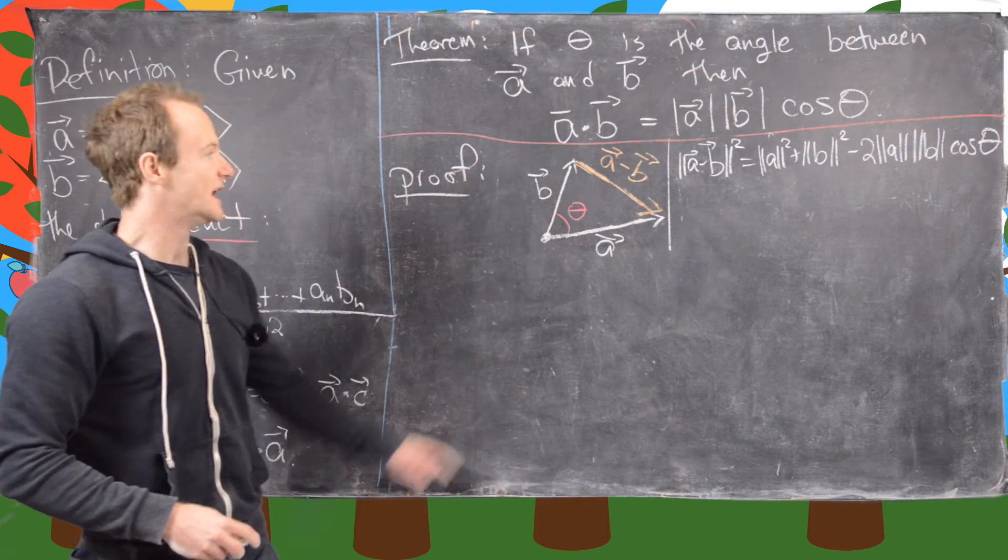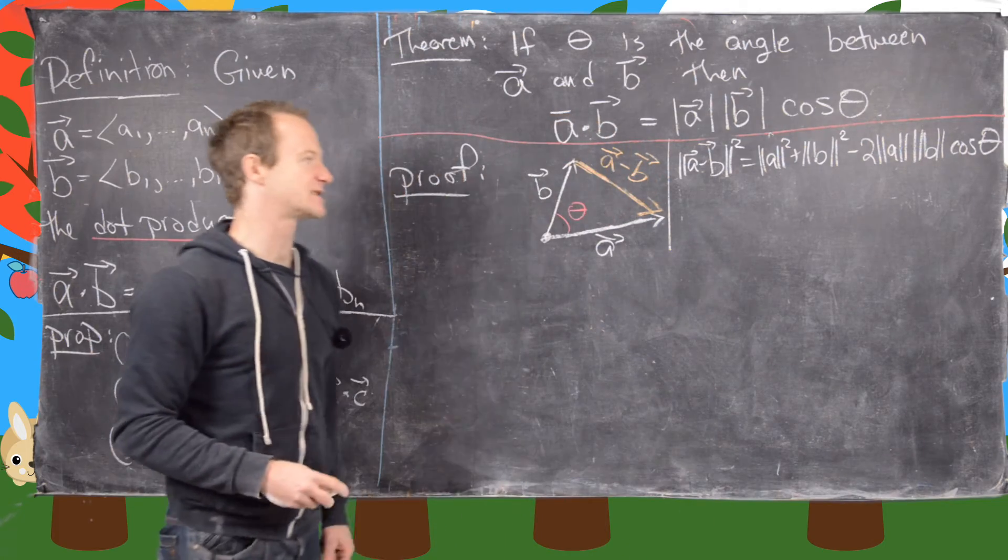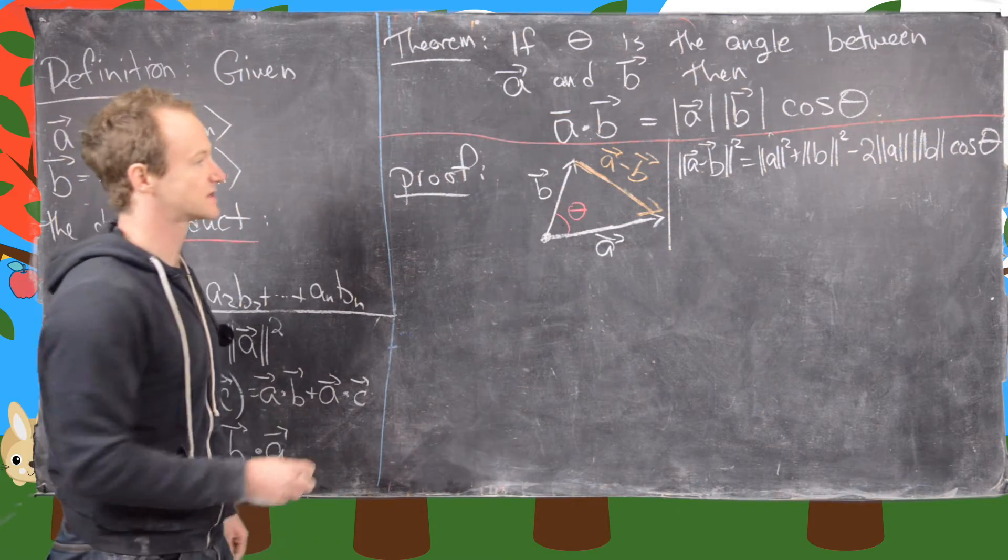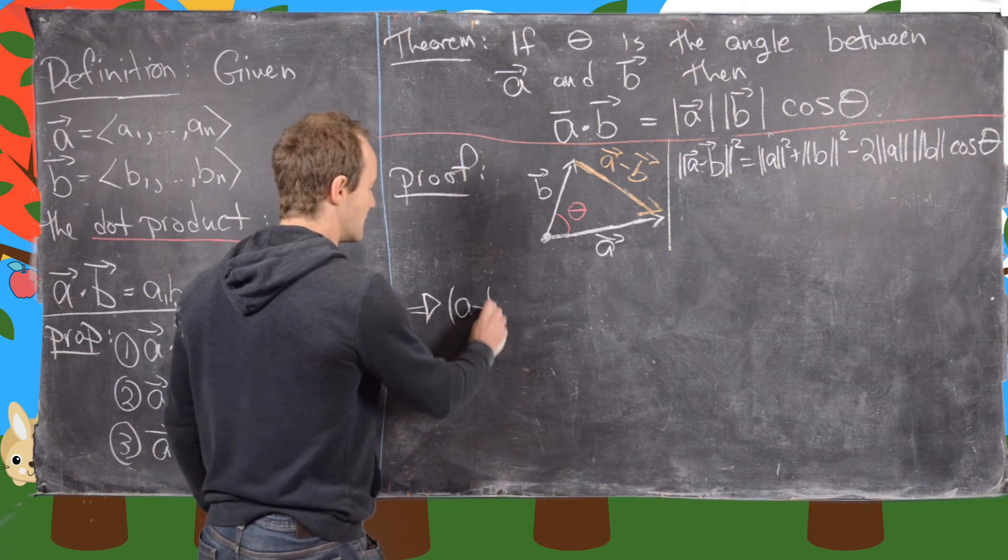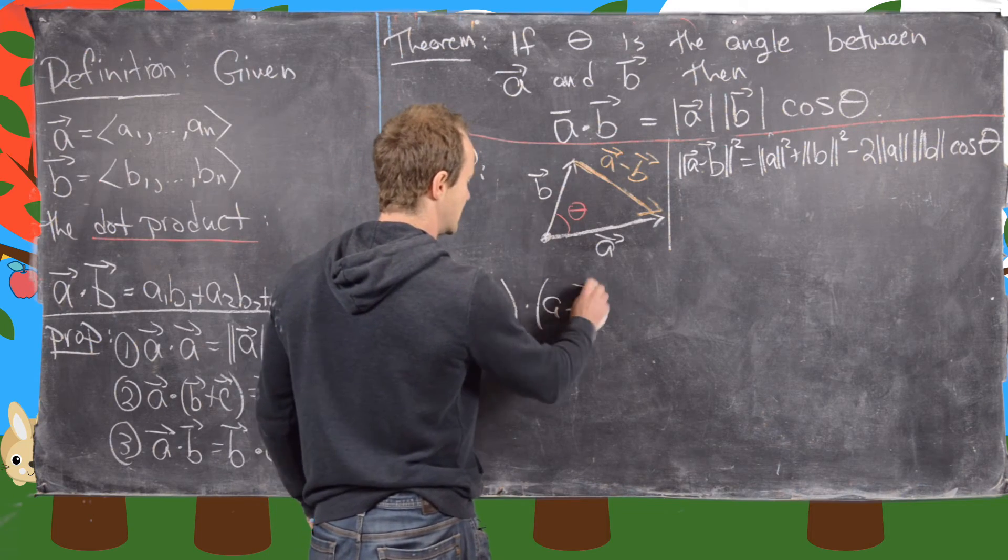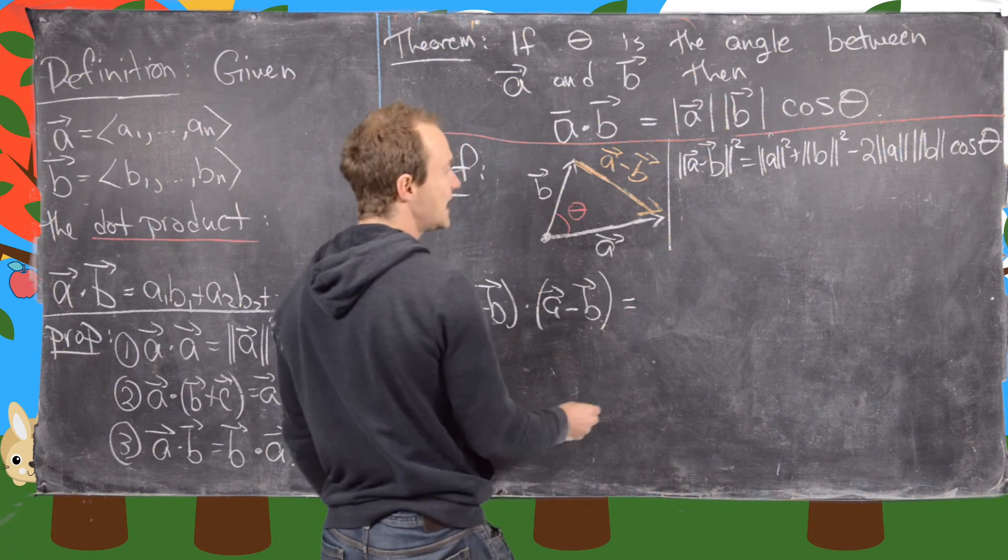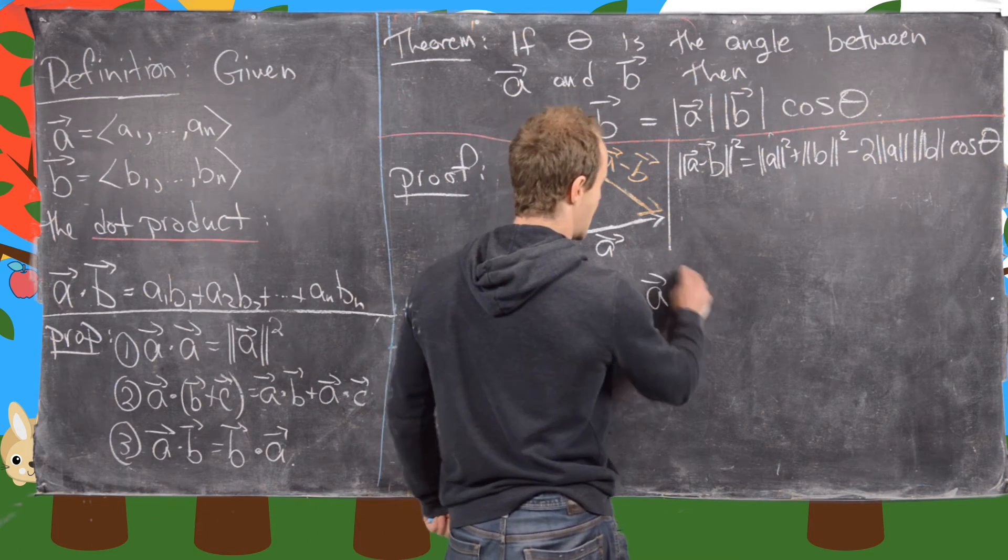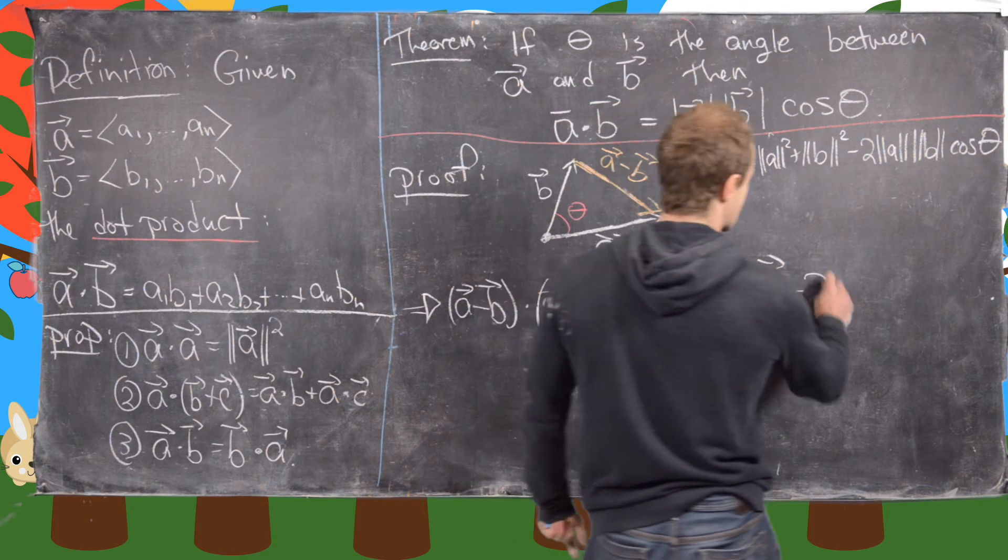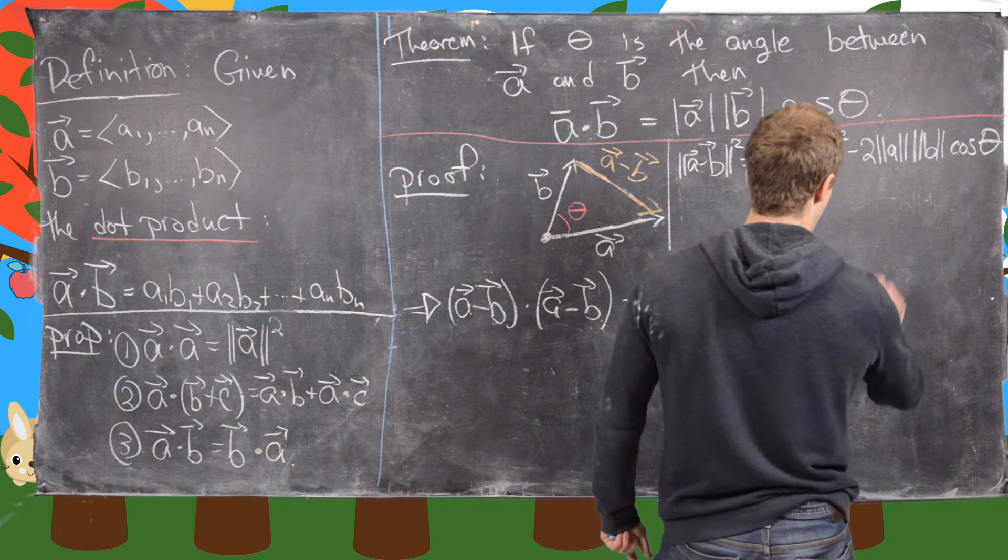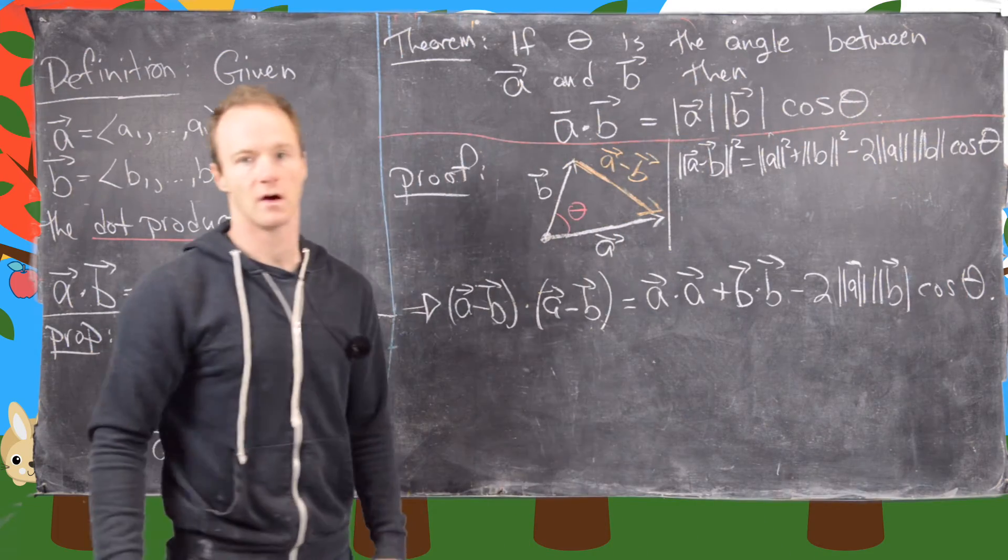Now what we're going to do is use this property 1 in order to express those lengths as dot products. So let's see what that gives us. So that will give us A minus B dot A minus B, so that's the left-hand side, equals A dot A plus B dot B minus twice the length of A times the length of B times cosines theta. Okay, good.